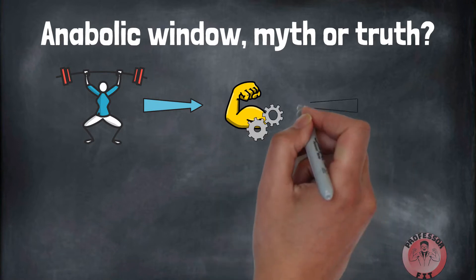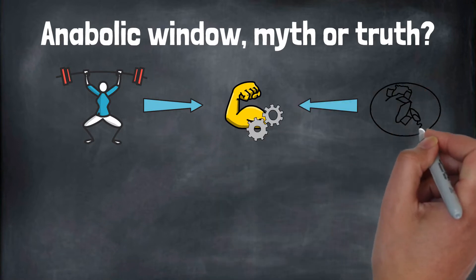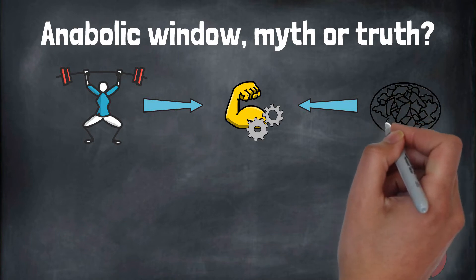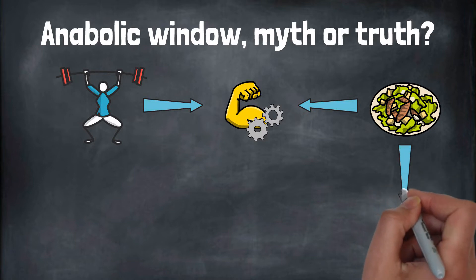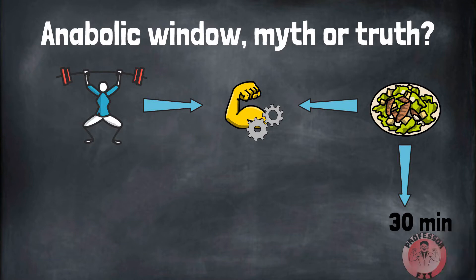However, optimal muscle growth goes beyond your actual workout. It also relies on post-workout nutrition. Your muscles need enough protein and carbohydrates to effectively recover. Many people claim you should eat a post-workout meal during the anabolic window. This term refers to the short time after training when your muscles are repairing and recovering.